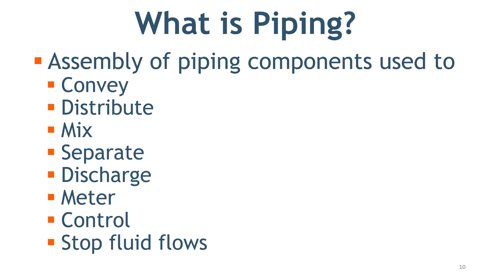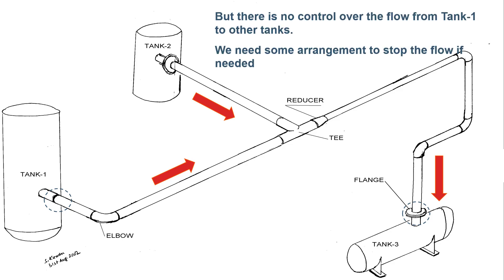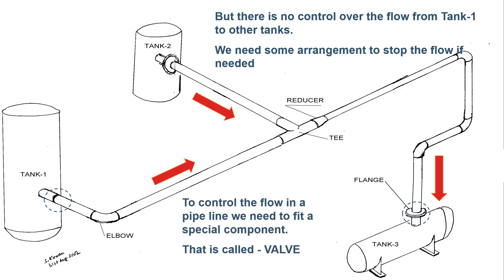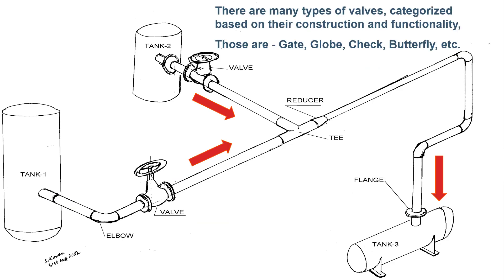Let's go back to our plant. Our tanks are connected, but do we have any control over the flow of the fluid? No — we need some arrangement to stop or control the flow. To control the flow in the pipeline, we need to fit a special component: a valve. There are many types of valves categorized based on their construction and functionality. Some of them are gate, globe, check, butterfly, and plug valves.